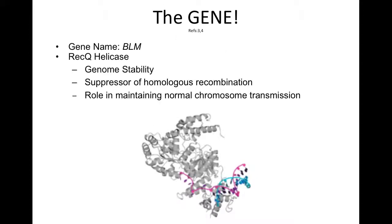The BLM gene encodes a RAC-Q helicase. Cells with the mutation that causes Bloom syndrome in the BLM gene are genetically unstable, undergoing a tenfold increase in homoglycerine combination when compared to unaffected cells. The mutation also causes chromosomes to missegregate during meiosis 1. Due to the genomic effects of this mutation, cancer is one of the most common symptoms.